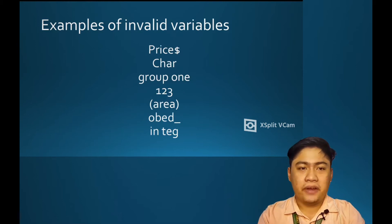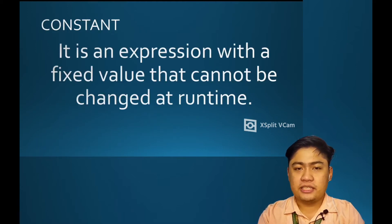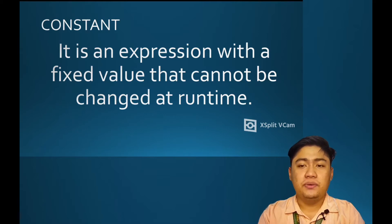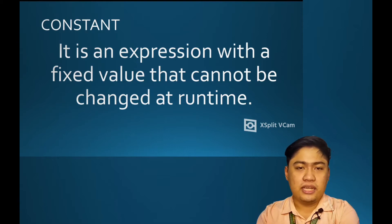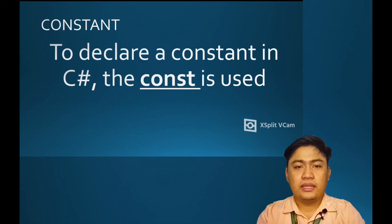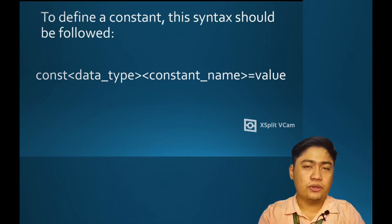A constant is an expression with a fixed value that cannot be changed during runtime. Unlike a variable, whose value can be changed during runtime based on the user's input. To declare a constant in C-Sharp, the keyword const is used.